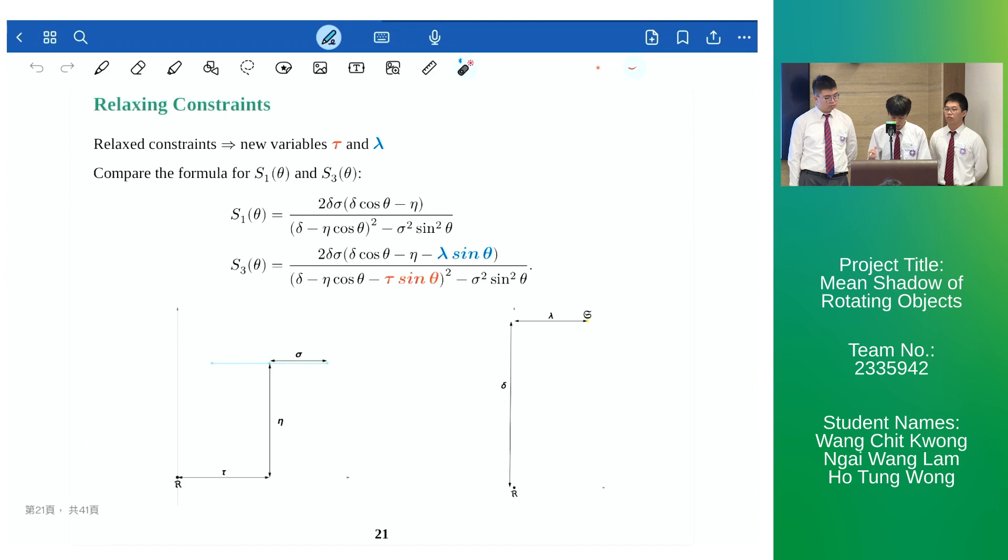With the relaxation of constraints we introduce new variables, namely tau and lambda, to denote the horizontal displacement of the edge and the light source. Hence we can achieve the expression for the length of the edge projection at a certain angle of rotation which is given to be absolute value of s3 theta.